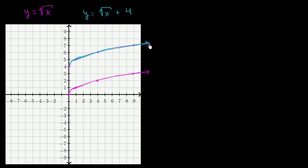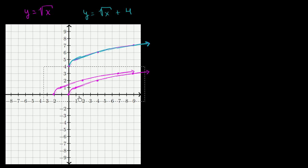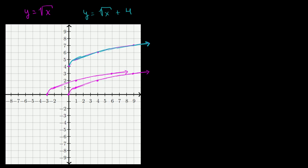But what if we wanted to shift it to the left? Let's say we wanted to shift it to the left by 3. So how would we define the function then? In this orange color, we want to shift by 3 — shifting to the left by 3.